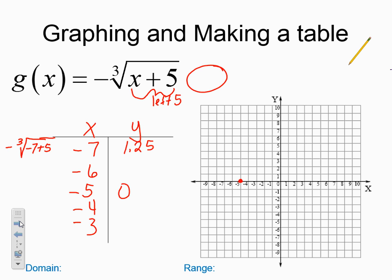And then if I were to take the negative cube root of negative 6 plus 5, same idea. That would be the negative cube root of negative 1. If I were to add the negative 6 plus 5, I get 1.